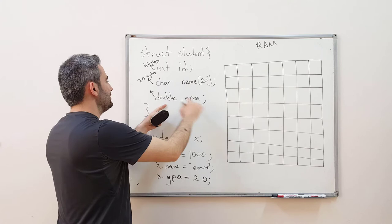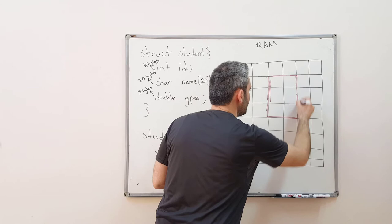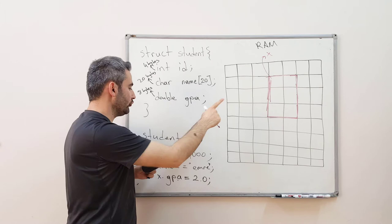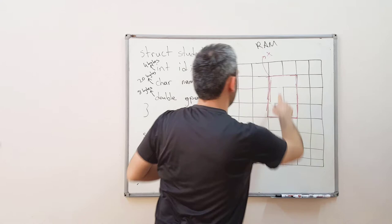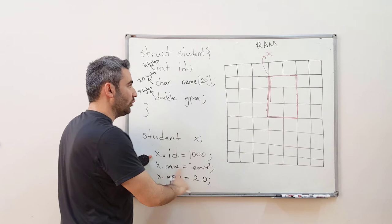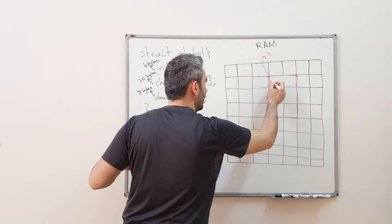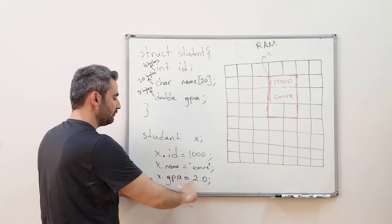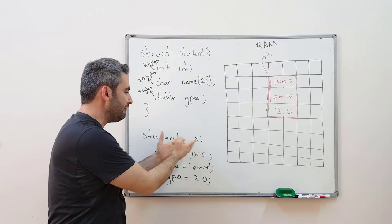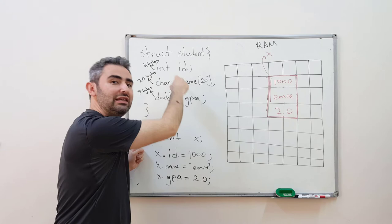When you run this code, memory will be allocated for x by the size of all its variables together. If the integer is 4 bytes, the char array is 20 bytes, and the double is 8 bytes, then 32 bytes of space will be allocated in memory. This variable x contains all three features: a field for the integer id, a char array field for the name, and a field for the double GPA.